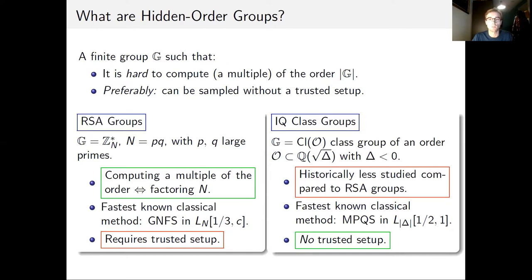Imaginary quadratic class groups are historically less studied than RSA groups, and computing a multiple of the order does not reduce to any well-studied computational problem. The fastest known classical method for computing the order is the multiple polynomial quadratic sieve. One positive aspect of imaginary quadratic class groups is that they do not need a trusted setup, whereas RSA groups do.